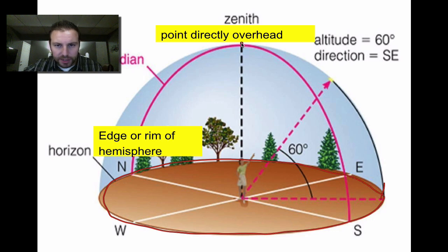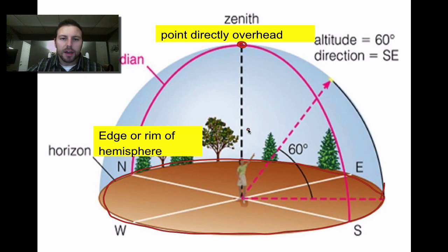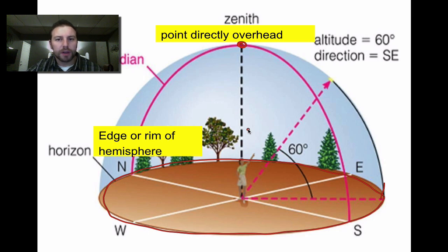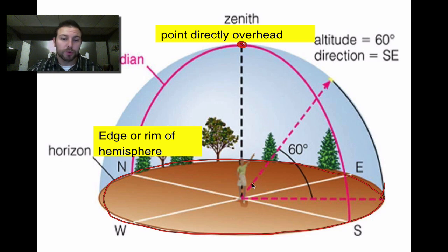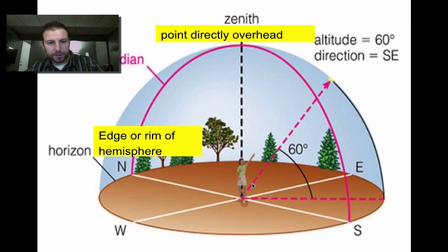The zenith is the point directly above you. If you look straight up, that's your zenith. Depending on where you are, your zenith is always going to be directly above you. We also have altitude and azimuth, which we're going to go over next.